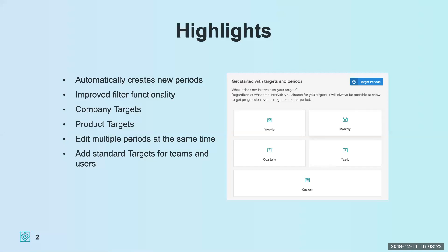What we are going to talk about today is the targets module. This is a new budget module in SalesScreen, updated to better follow your recommendations and wishes for budget setting for your teams and employees. Some of the new highlights include automatically creating new periods in your budget, more functionality regarding filters, and automatically summarized targets for your company and teams.